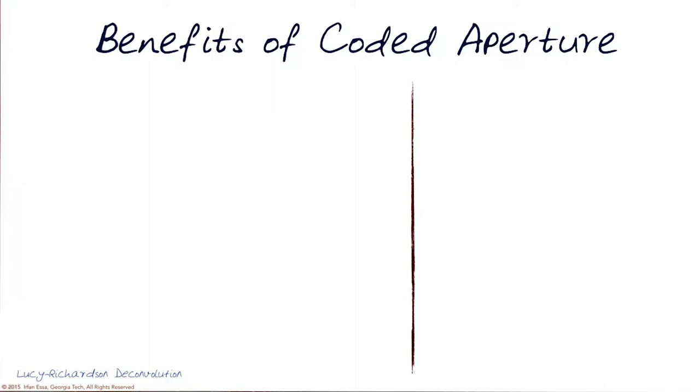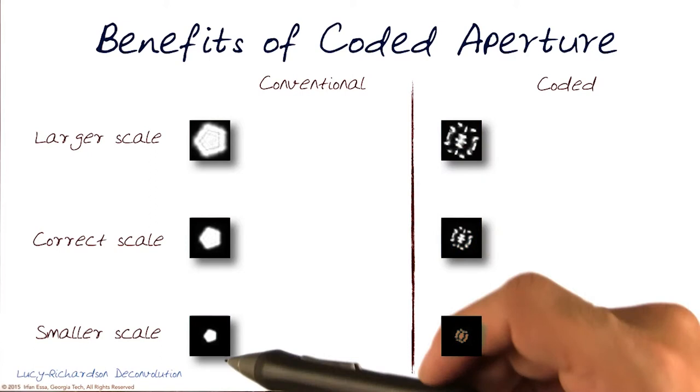Let's analyze some of the benefits of coded aperture here. Basically, we looked at a variety of different types of kernels here, a larger scale, correct scale, and a smaller scale.